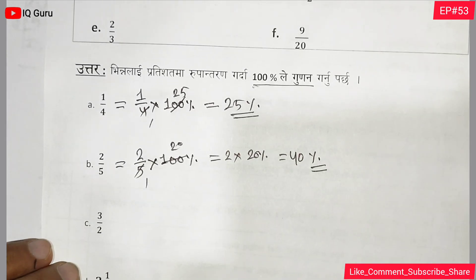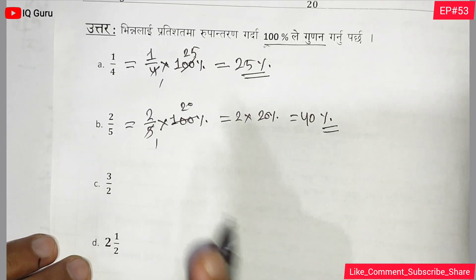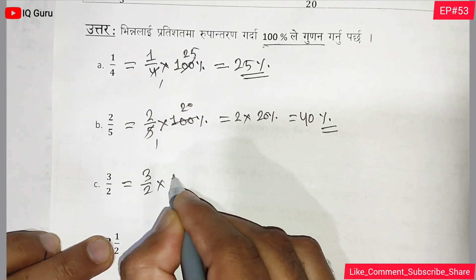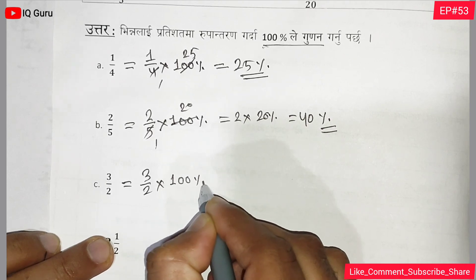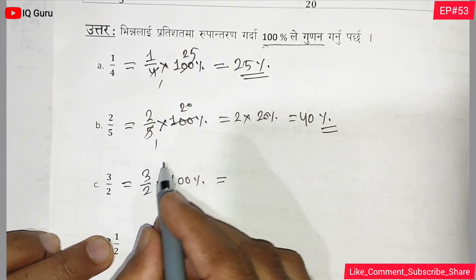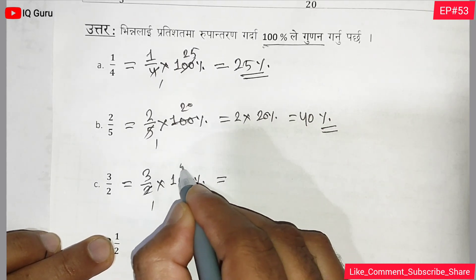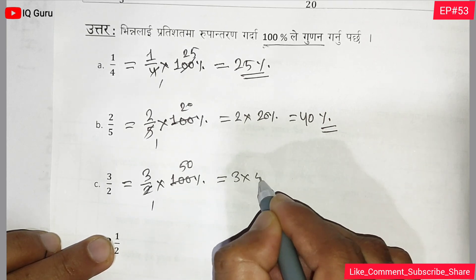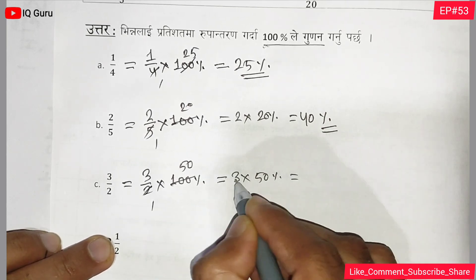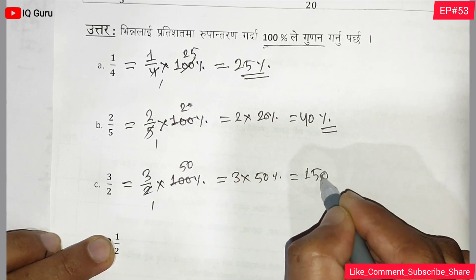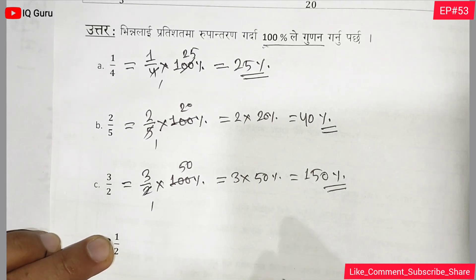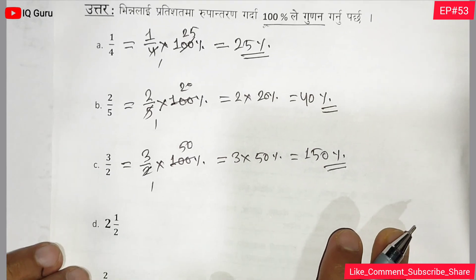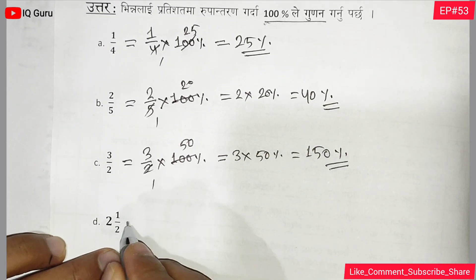For question c: 3 by 2 into 100 percent equals 150 percent. This is question number d, 2 and 1 by 2.